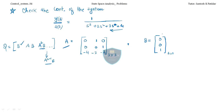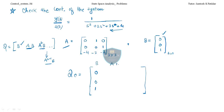We have B, and we need to compute AB and A²B. Multiplying A with B gives AB = [0, 1, −2]ᵀ. Now form the full Qc matrix with three columns: B = [0, 0, 1]ᵀ, AB = [0, 1, −2]ᵀ, and A²B = [1, −2, 1]ᵀ.